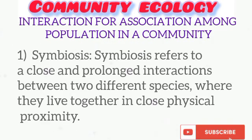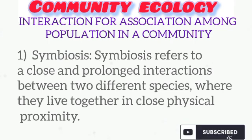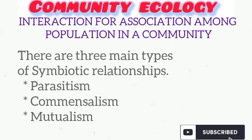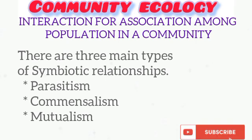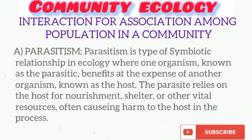One type of association is the symbiotic association. Symbiosis is a kind of association between two species where both can benefit — this is called mutualism — or where one benefits and the other is harmed, which is termed parasitism, or where one benefits and the other is unaffected, which is termed commensalism. Symbiotic association is of three types: parasitism, commensalism, and mutualism.